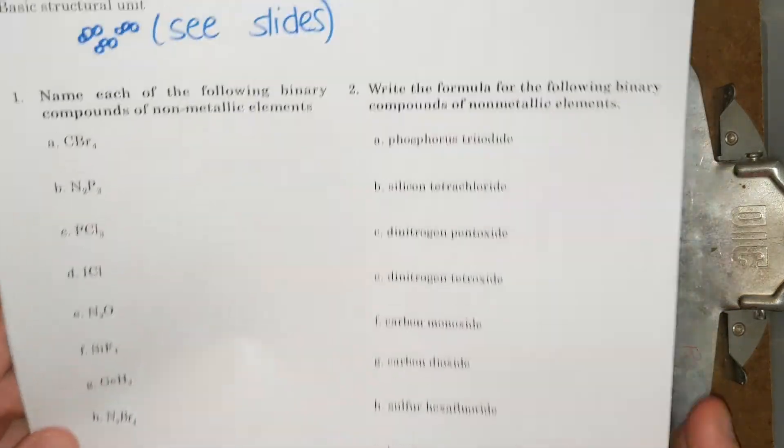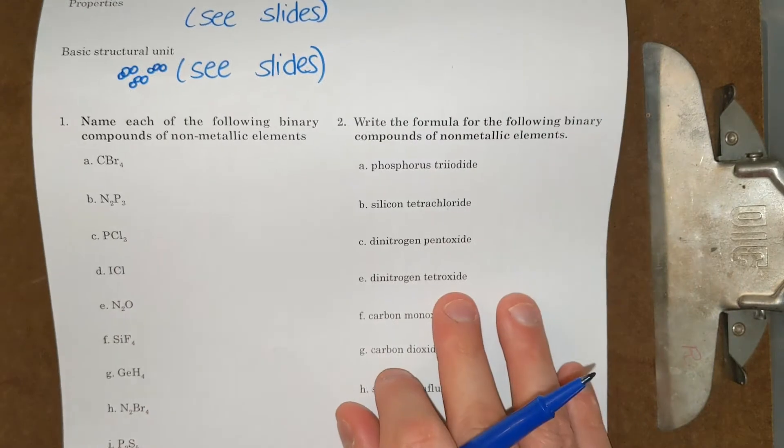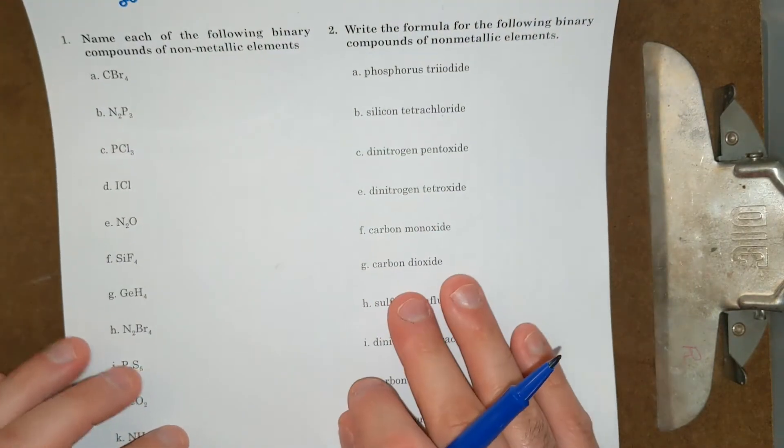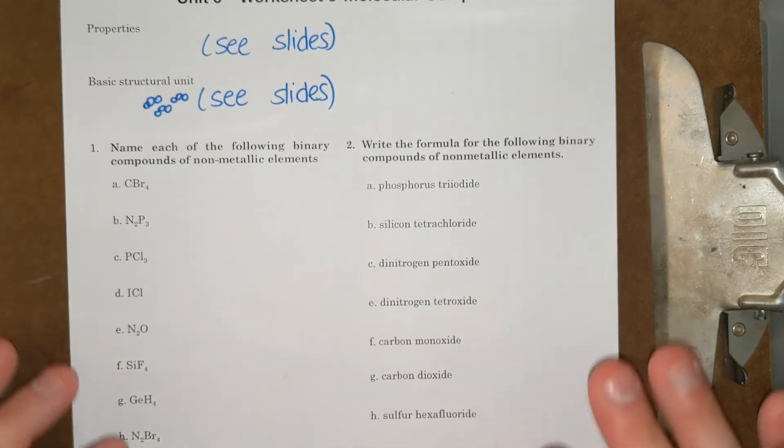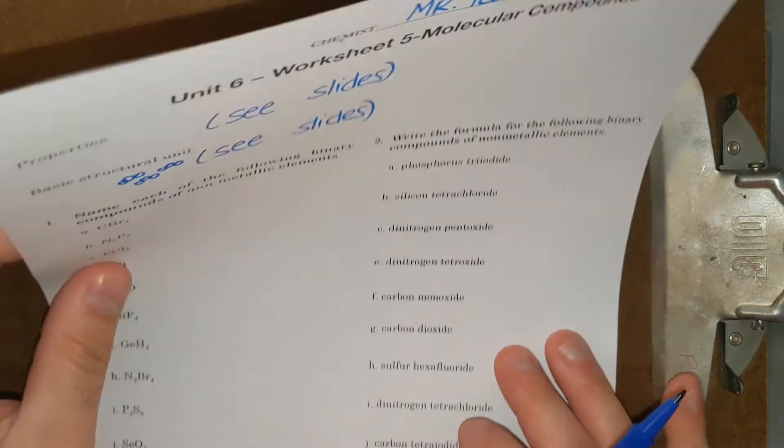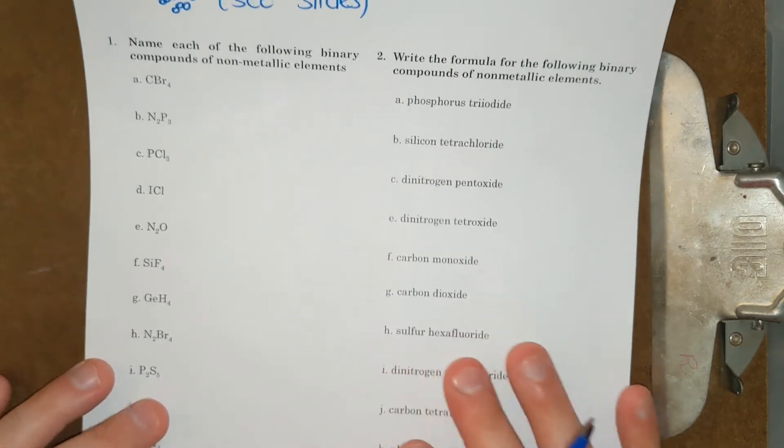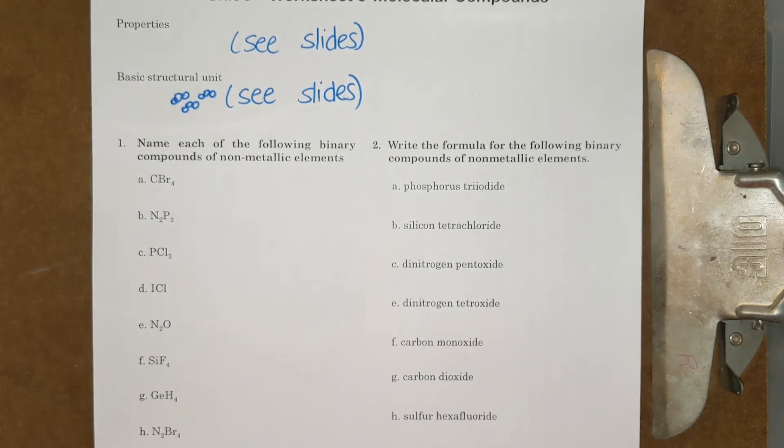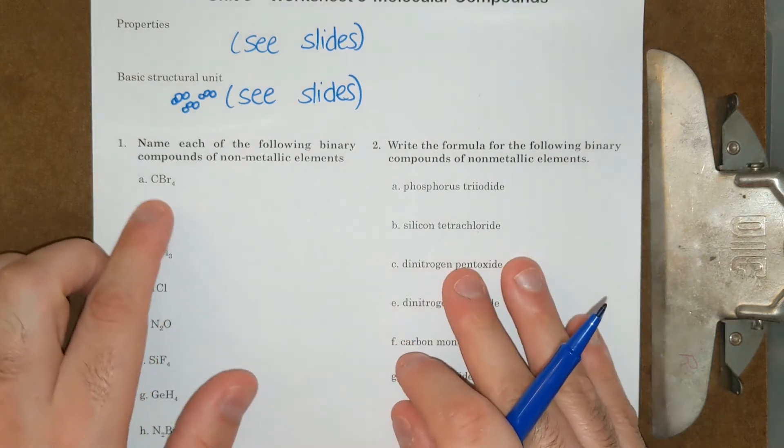I am going to go through the answer key for first naming the compounds from the formula, and then writing the formula from the names. A lot of us have picked up that the molecular nomenclature is not as stressful as ionic. There's like a lot less to manage. So let's look at the first one.